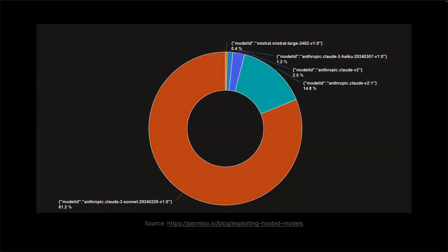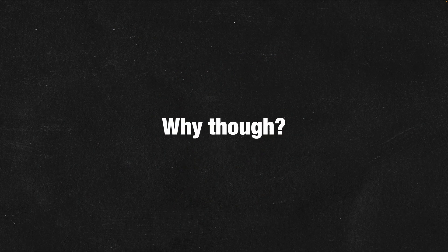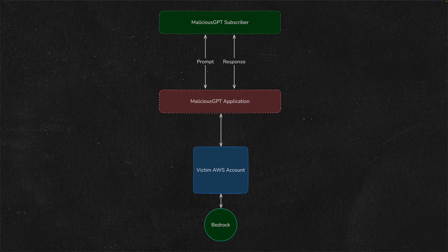While Permiso observed multiple models being used, the one most often used has been Anthropic's Claude 3 Sonnet. Attackers are doing this so they can host AI role-playing services, and they use common jailbreaking techniques to get the models to accept and respond with content that would normally be blocked by the model.